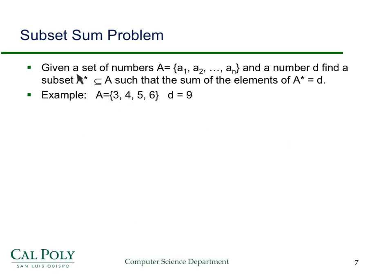The next problem is the subset sum problem. Given a set of positive integers and a target number d, we want to find a subset A* such that the sum of the elements of A* equals d. For example, let A be {3, 4, 5, 6} and d equal 9. By inspection, there are two possible solutions: {3, 6} and {4, 5}. Try to draw yourself a state space tree for this problem. The starting point will be that A* is the empty set, and you need to think about what the branches are and how the tree branches downward.